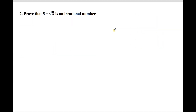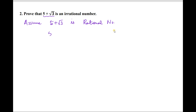Now the second question — a very important question: prove that 5 + √3 is an irrational number. You should assume it is rational in order to reach a contradiction. The first step is: assume 5 + √3 is rational.